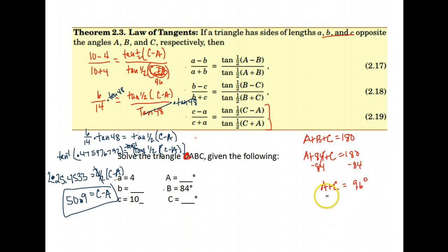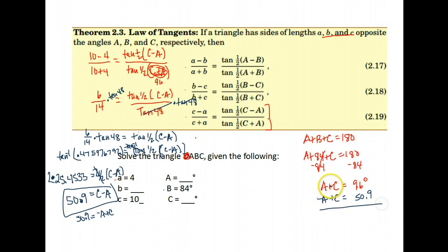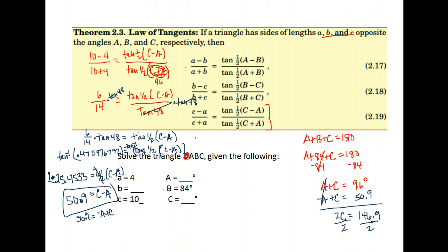Remember over here, we knew that A plus C was 96. And now we know that C minus A is 50.9. So I can bring that over here. Rather than writing it as C minus A, I'm going to write it as negative A plus C equals 50.9, because that is the same thing. And if you remember back in algebra, we could do elimination, where we add the two equations together. The A and the negative A would cancel. C plus C gives me 2C. Then I add 96 and 50.9, which gives me 146.9. And then I divide both sides by 2, and for angle C I get 73.45 degrees.